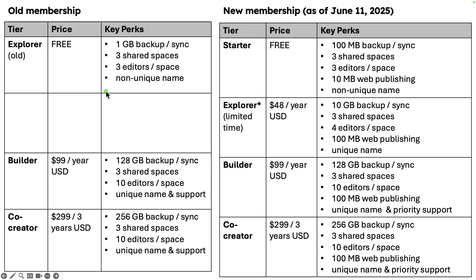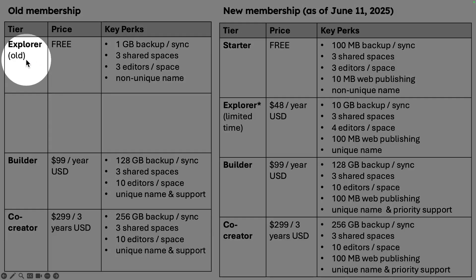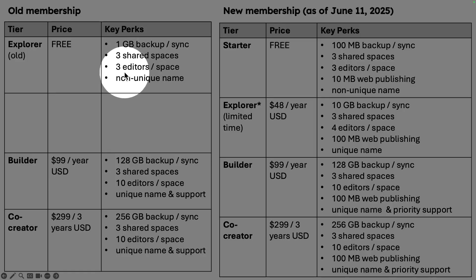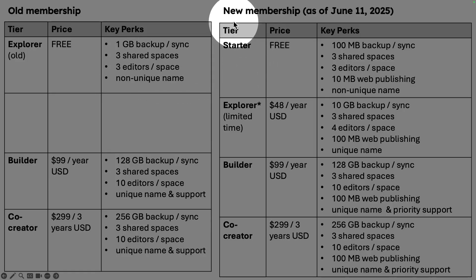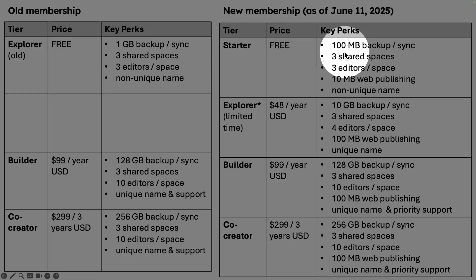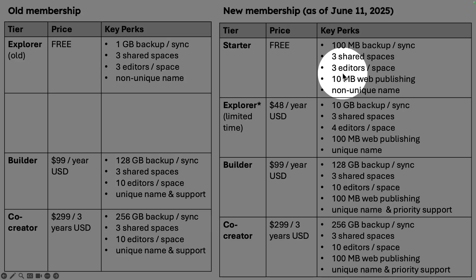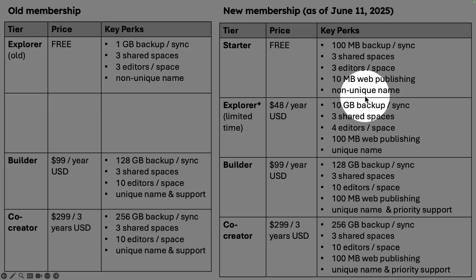Let's take a look at the old and new memberships together. The old Explorer plan that was free gave you one gigabyte of sync and backup, three shared spaces, three editors, and a non-unique name. The new Starter plan as of June 11th gives you a hundred megabytes of backup and sync, three shared spaces, three editors, and 10 megabytes of web publishing — and you don't have a unique name.